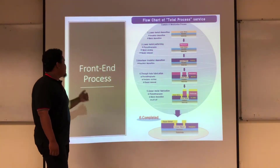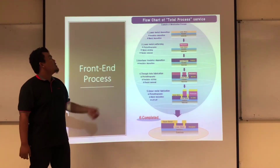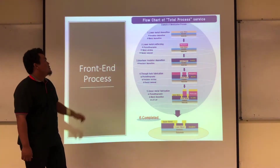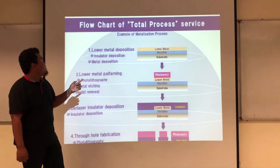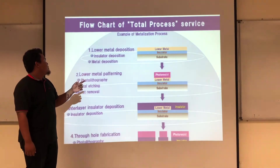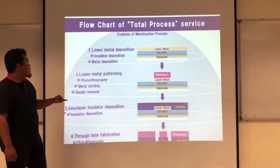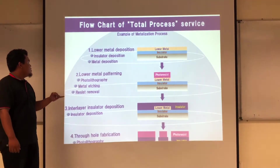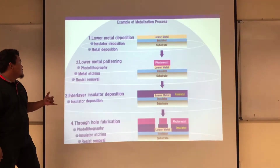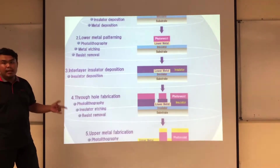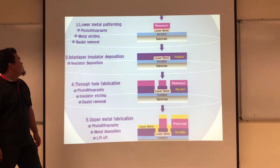For the front-end process, this is the total process of VLSI. Firstly, we use lower metal deposition, which consists of insulator and metal. Secondly, we use lower metal patterning, which consists of photolithography, metal etching, and resist removal.